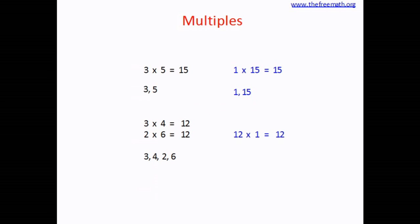In the case of 12, you can write 12 as 12 multiplied by 1. That means here as well, 12 is a multiple of 1 and 12, along with 3, 4, 2, and 6. So 12 is a multiple of 3, 4, 2, 6, 1, and 12.